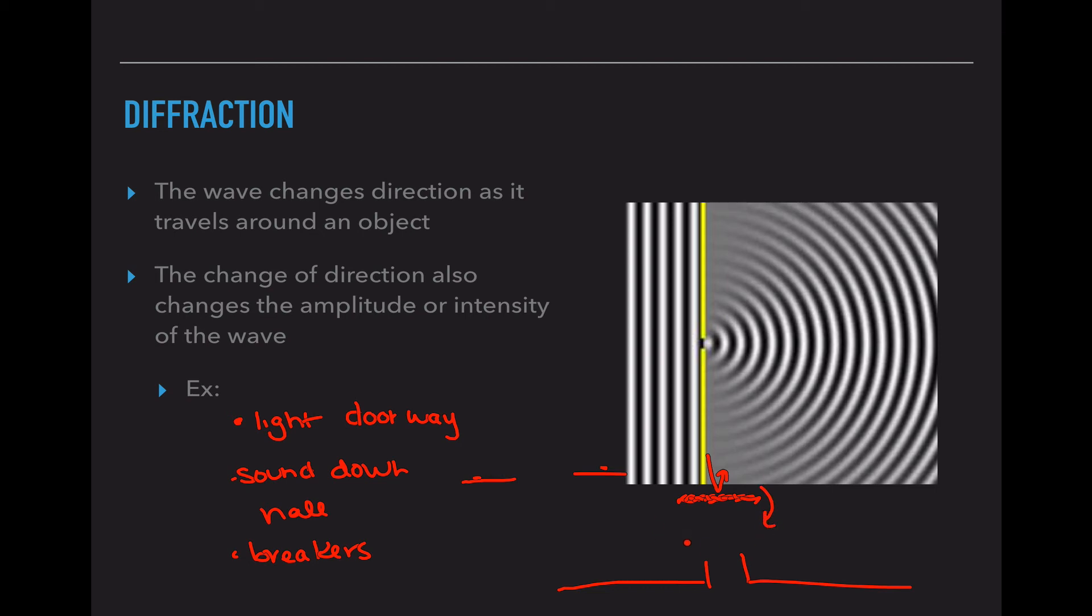So we have three interactions with surroundings. Reflection, which is bouncing. Refraction, which is bending. Or diffraction, which is slowing down.